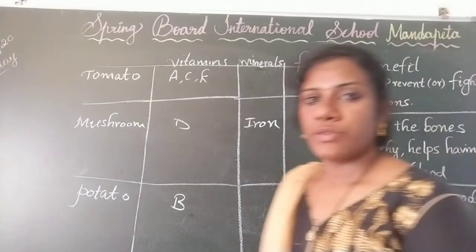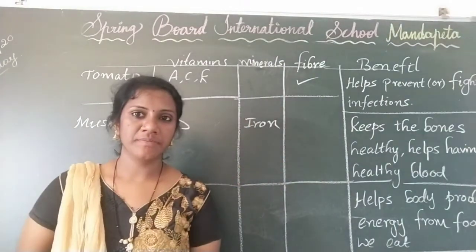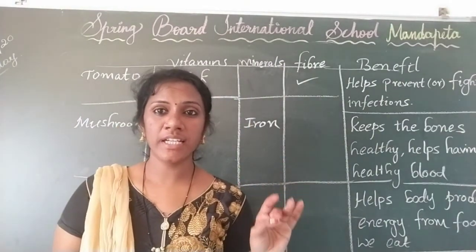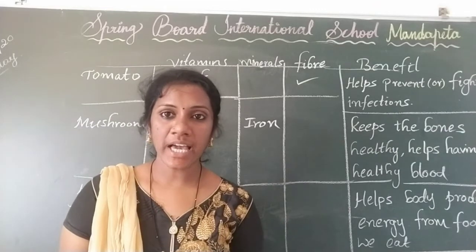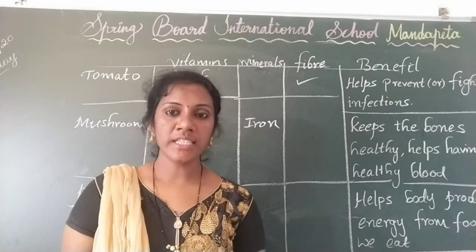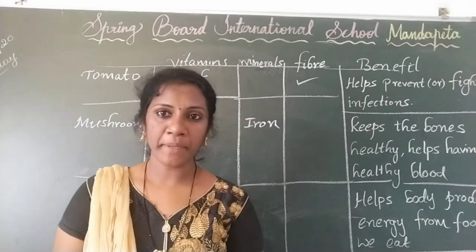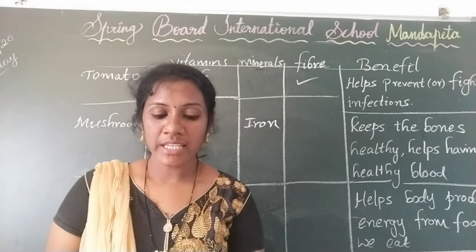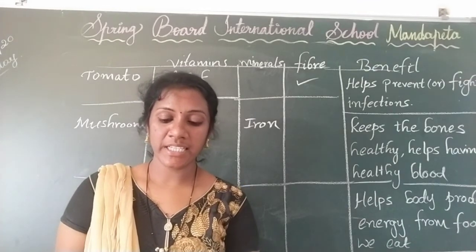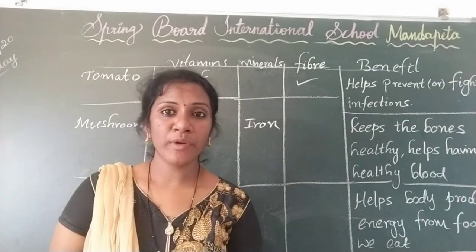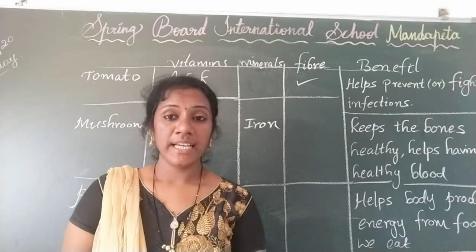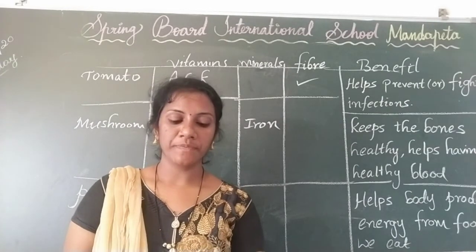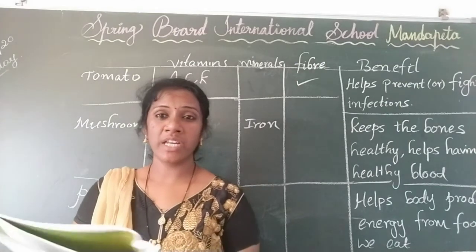Next, peas. Peas have vitamins A, C, and D. Peas don't have minerals and fiber. So these vitamins A, C, and D can strengthen our immunity.